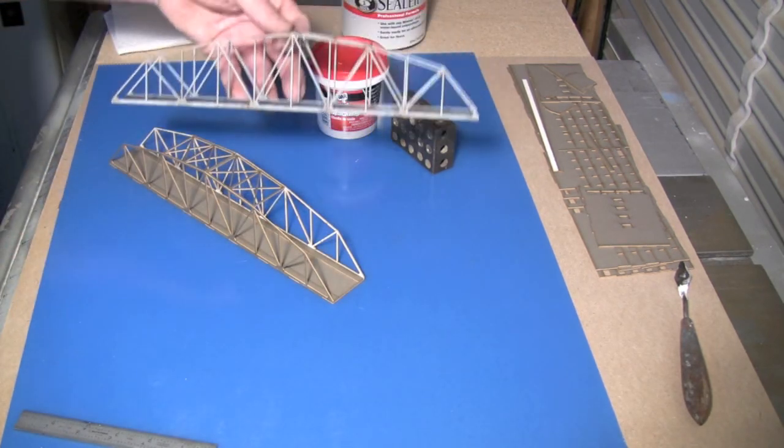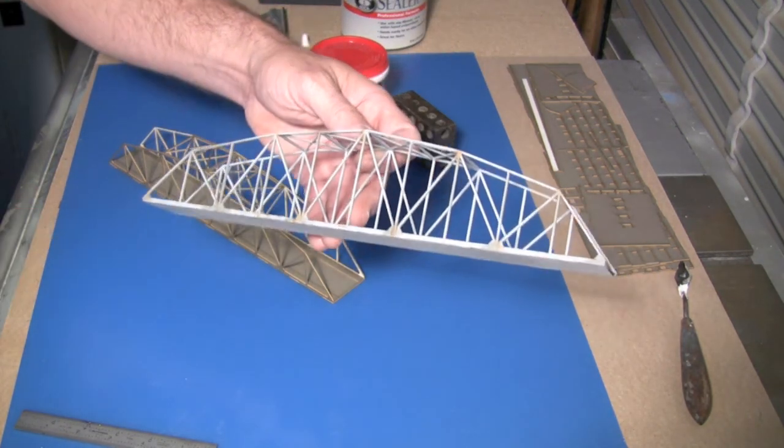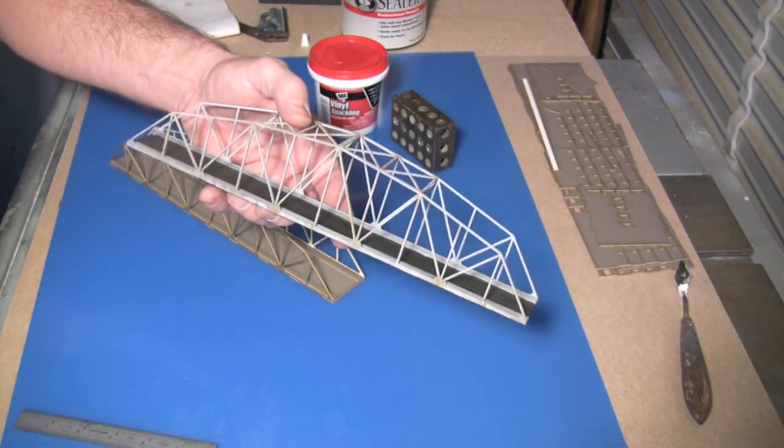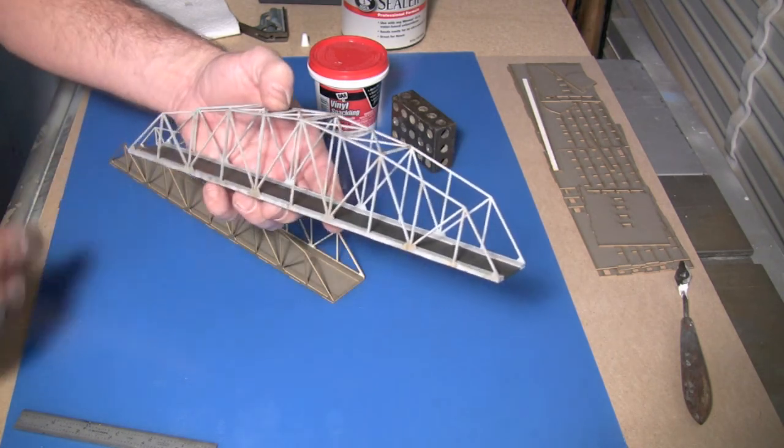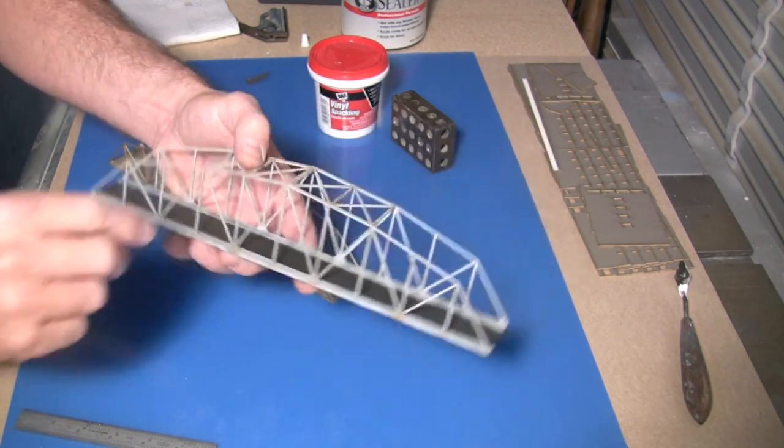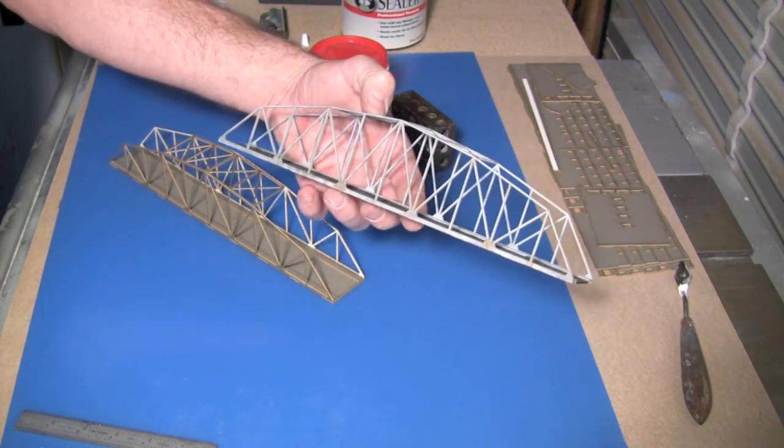I'll just show you—this is the finished one that I've already done, and that's what this one here will look like when it's painted up and weathered. Again, I'm just going to spray it with a gray primer and leave it gray, paint the road black, and then just do a little rust weathering here and there. And that's it.